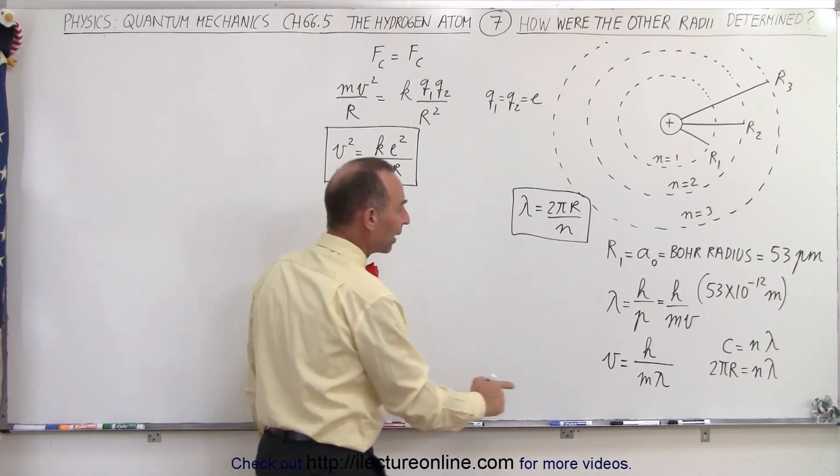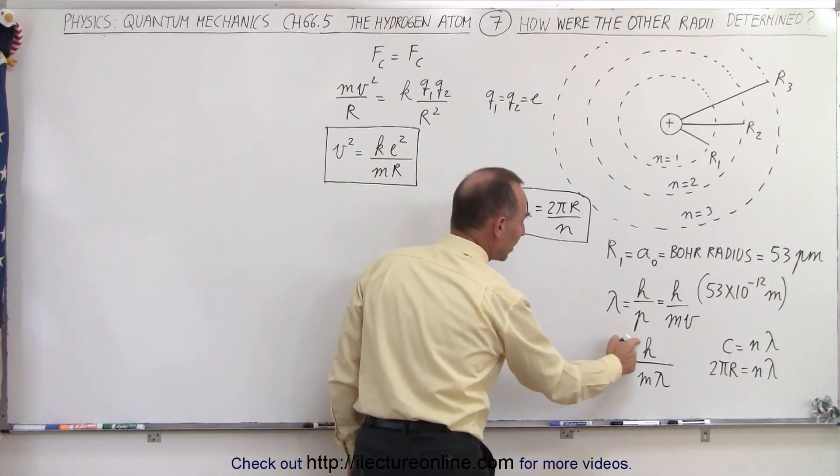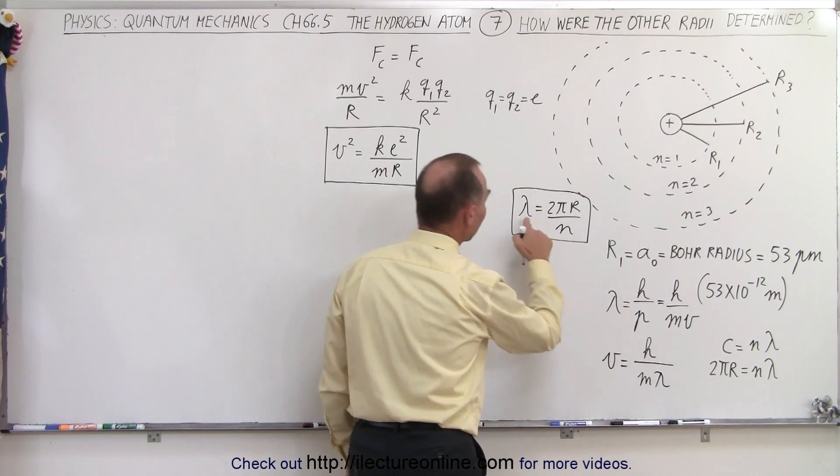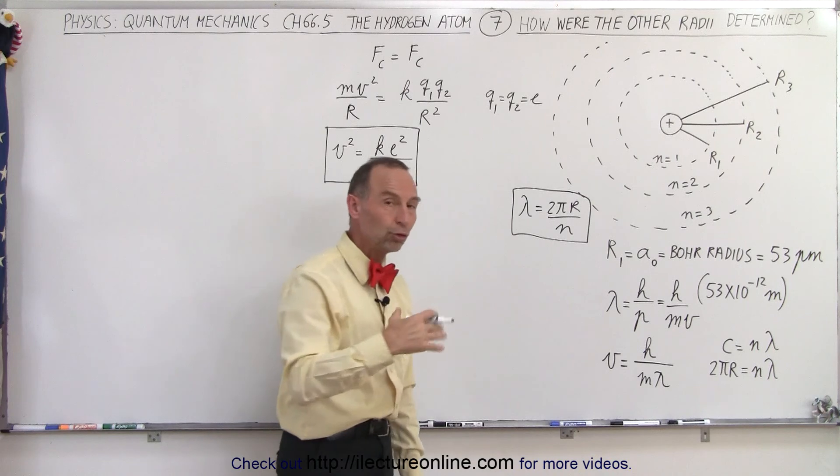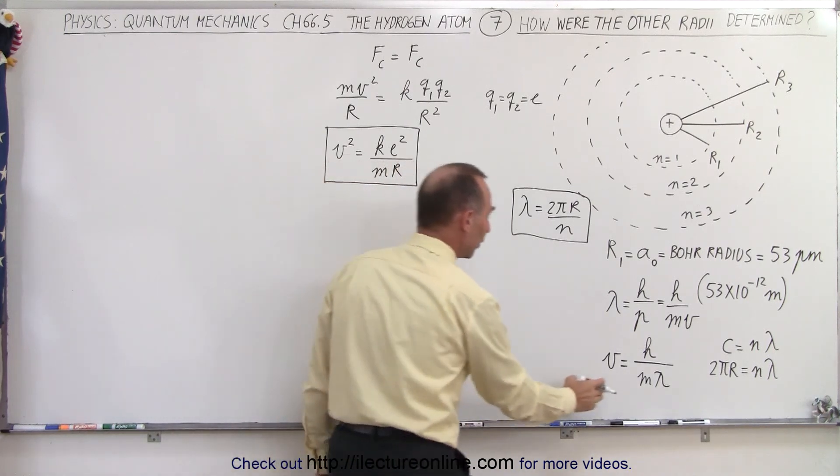So what we're going to do now is we're going to write the velocity in terms of H over m times lambda, lambda not being equal to 2πr over n, instead of just 2πr that we used in the previous video.